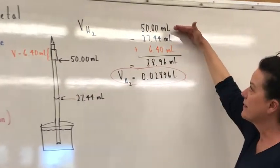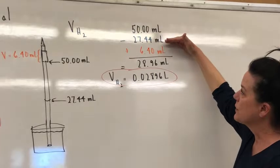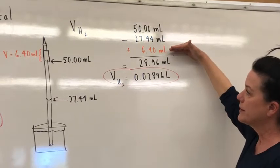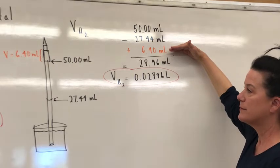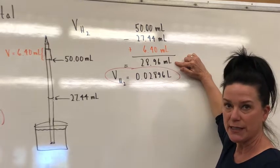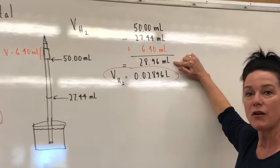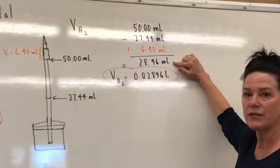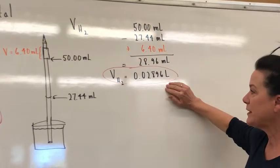So the amount of hydrogen contained is everything between 27.44 milliliters and 50 milliliters, plus that extra little bit. So here I've done the math, 50 milliliters minus 27.44, and then I'm going to add that extra bit that was in the unmarked area. So I come up with my volume in milliliters, but because we're using PV equals nRT, because there's R present, we have to have pressure in atmospheres and volume in liters. So I've converted to liters.